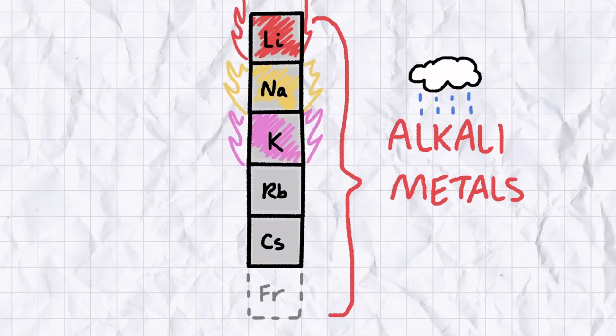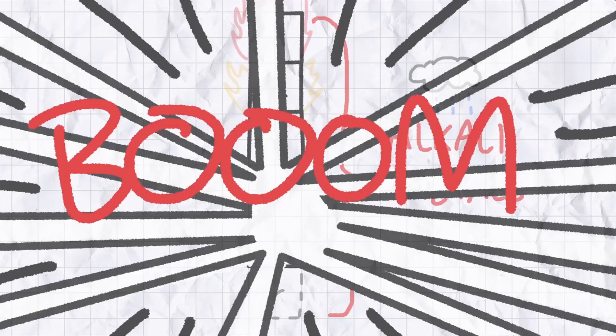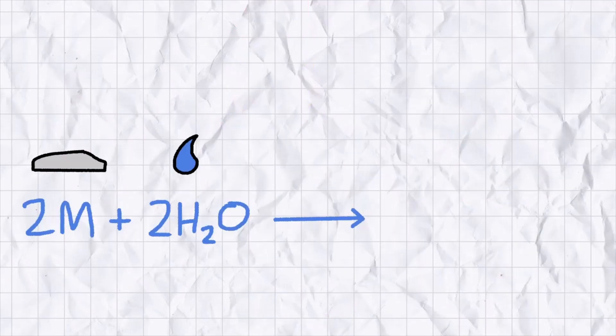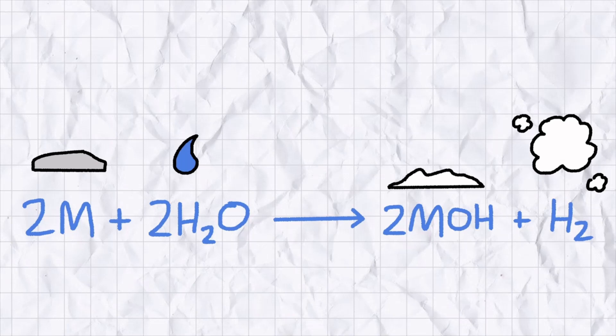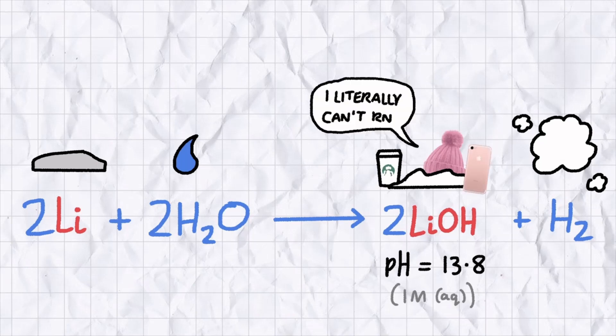Well, that and when you get them wet, they'll all either catch fire or explode, depending on how far you go down the table. All of the Alkali Metals react vigorously with water to produce hydrogen gas and a metal hydroxide. In this case, basic colorless crystals of lithium hydroxide. That's basic as in has a high pH, not has a pink iPhone in a playlist of sad songs on Spotify.